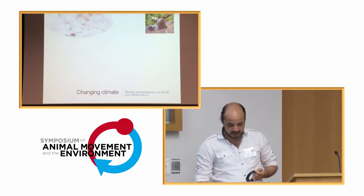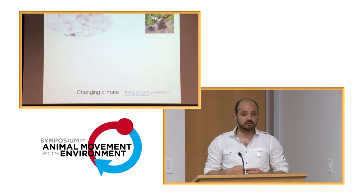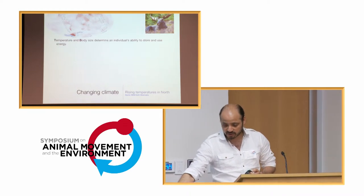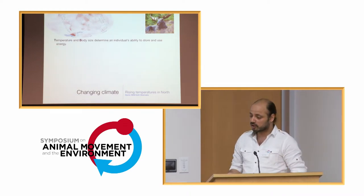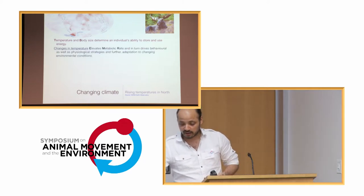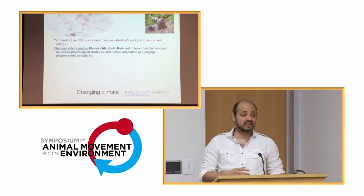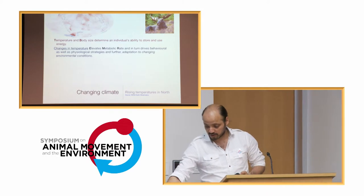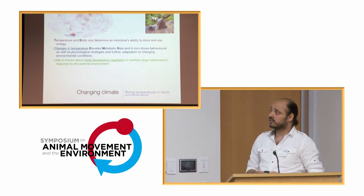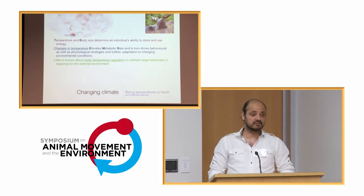To start off, we all know the changes in climate and how northern systems are vulnerable — northern animals are so much more vulnerable to rising temperatures. Temperature and body size are known to influence an individual's ability to store and use energy. These changes elevate metabolic rates and drive behavioral adjustments and movement patterns in response to climatic conditions. Little is known about how external environment influences the physiology of free-ranging animals, as this has not been possible to track until now.